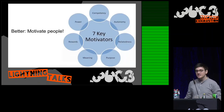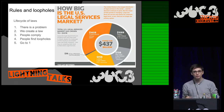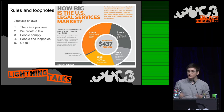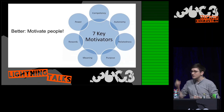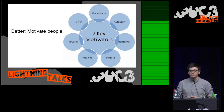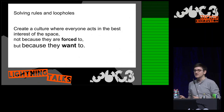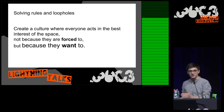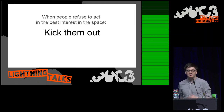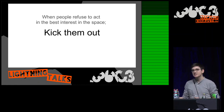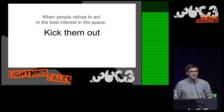The next thing is rules and loopholes. One of the issues with being a hacker is that you're incredibly good at finding loopholes, so running a hacker community using rules is an incredibly bad idea. What's better is to motivate people to do the right thing — create a culture where everybody works in the best interest of the hackerspace, not because they're forced to, but because they actually want to. If you see people who are not doing that, you can talk to them, coach them. And if they refuse, just kick them out. Whatever they contribute, they will take away more than they contribute.